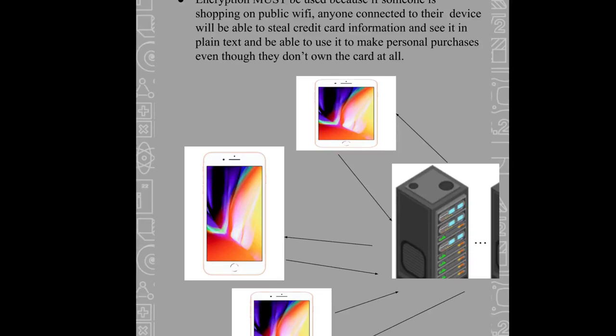Now, higher availability is pretty desirable — it's the highest tier. The second most tier would probably be integrity. Encryption must be used, as if you're shopping on public Wi-Fi, someone can see your credit card information and steal it, and make purchases. So integrity is probably the second most requested thing.